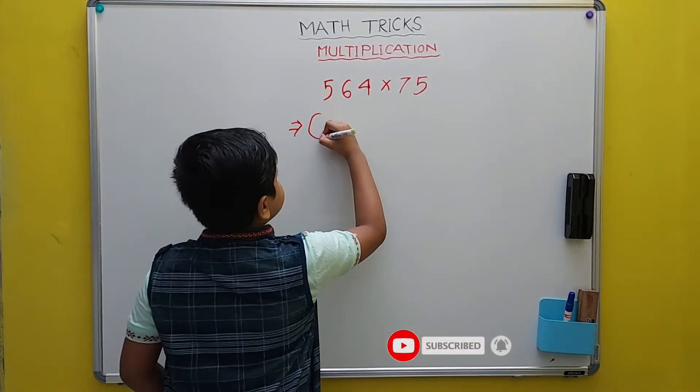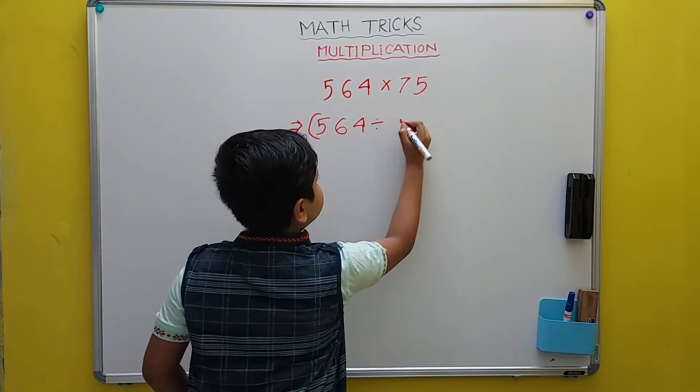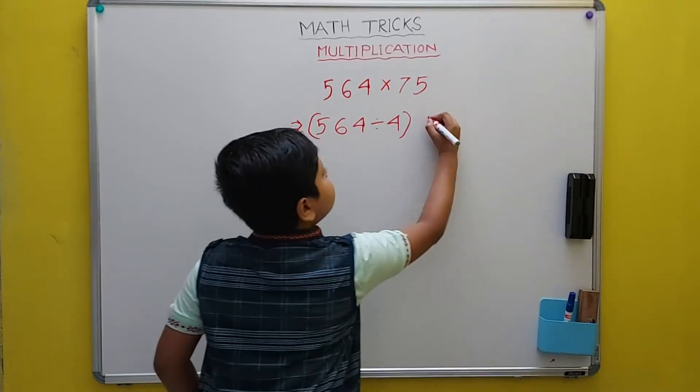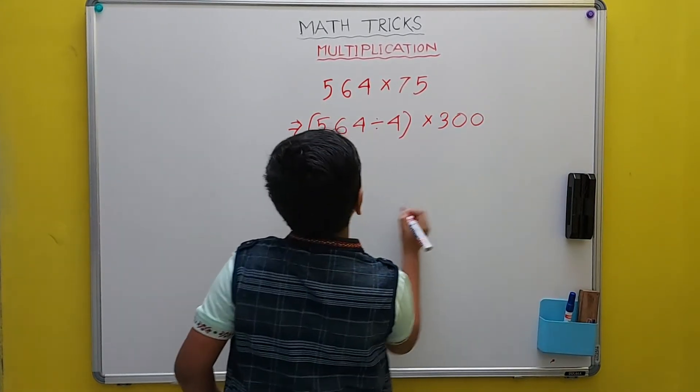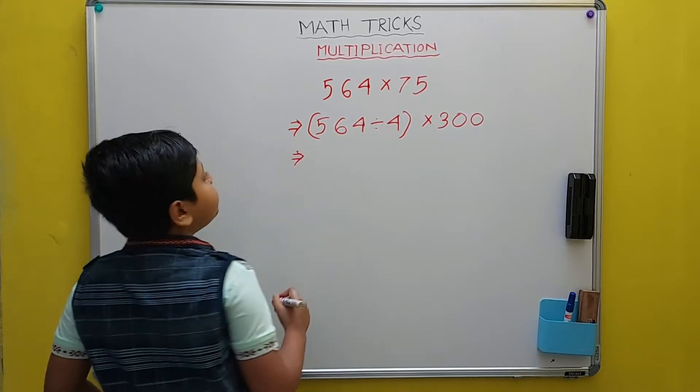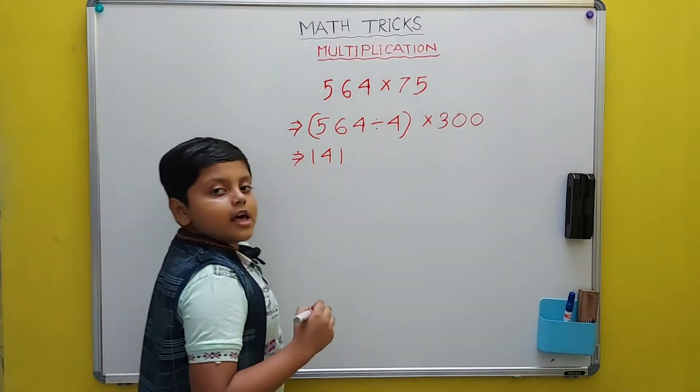As I said, we will divide 564 by 4, and then multiply that result by 300. The result of this division will be 141.